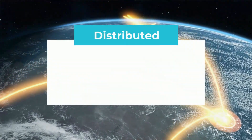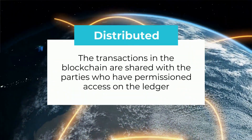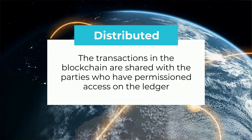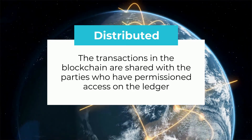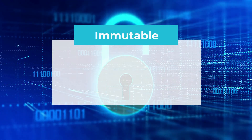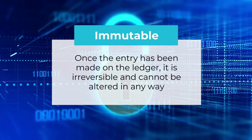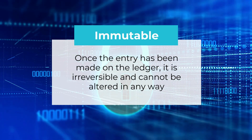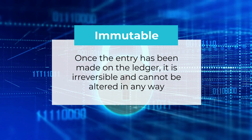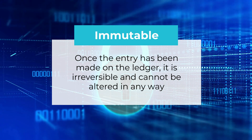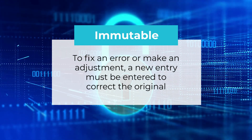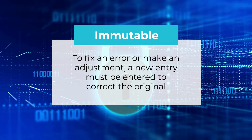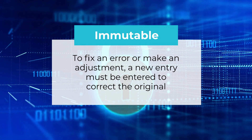What does distributed mean? Distributed means the transactions in the blockchain are shared with the parties who have permissioned access on the ledger. What does immutable mean? Immutable means that once an entry has been made on the ledger, it is irreversible and cannot be altered in any way. To fix an error or make an adjustment, a new entry must be entered to correct the original.